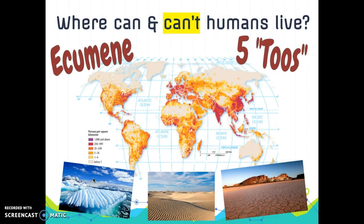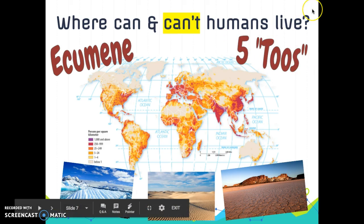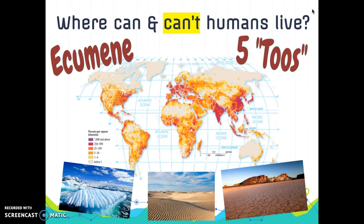Now let's talk about sparsely populated regions. People want to live in places where they can survive with relative ease and comfort — able to grow food and live in temperate climates. There are five physical environments people avoid, called the 'five twos': places that are too dry, too wet, too cold, too hot, or too mountainous.